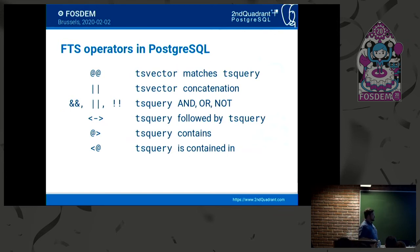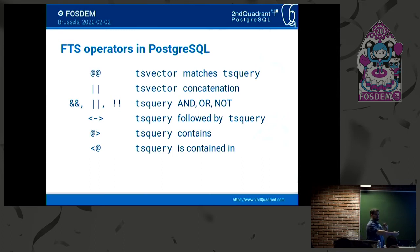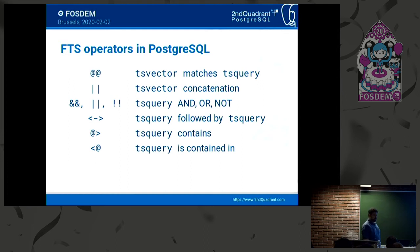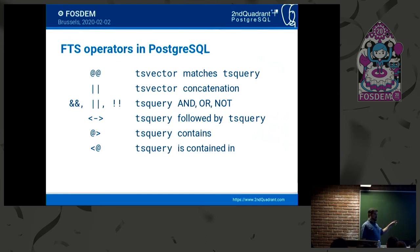The operator types for full text search include the double at sign (@@), which means ts_vector matches ts_query — and it works both ways. We have ts_vector concatenation. For ts_queries we have AND, OR, and NOT operators. We also have the followed-by operator, meaning ts_query1 must be immediately followed by ts_query2 — that defines word order in your search. If instead of the minus sign in the middle of the operator you insert a 2 or 3, that means two or three tokens away, so you can define the distance.